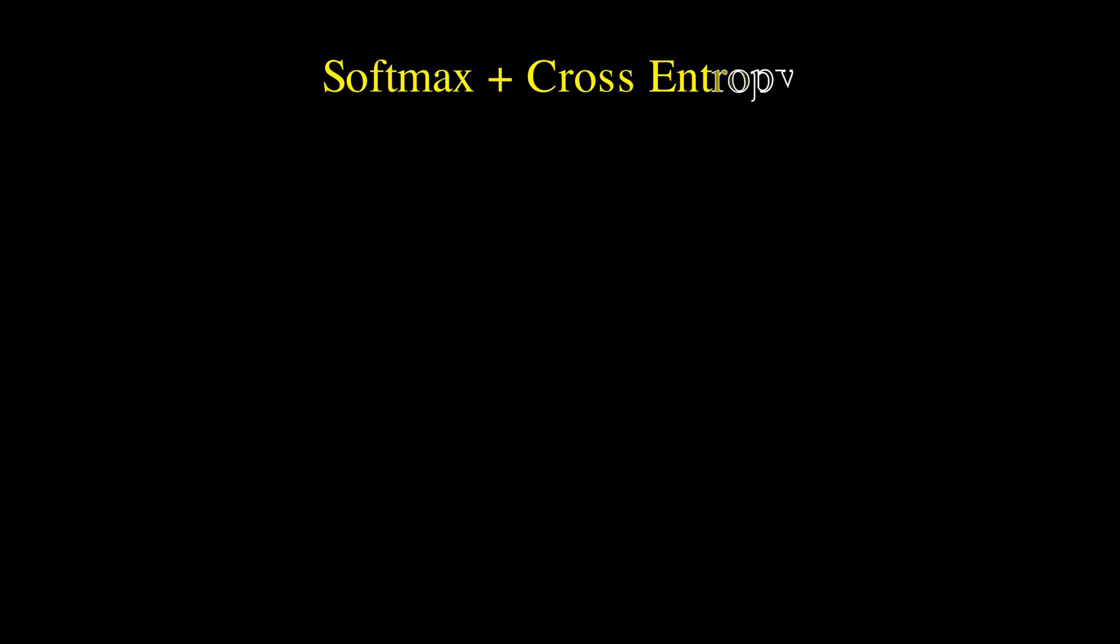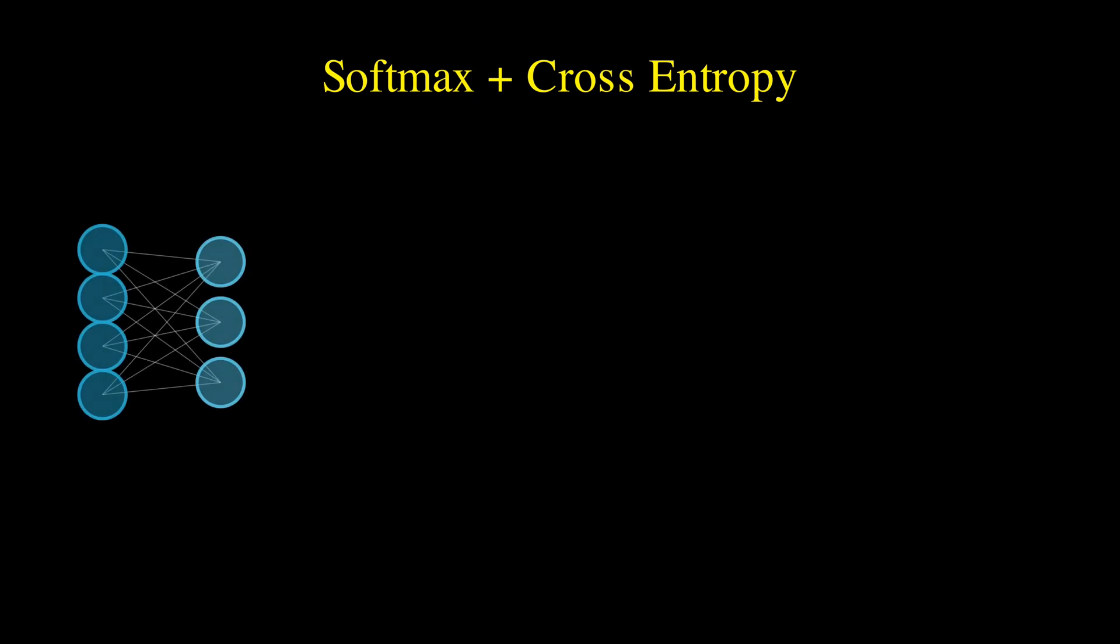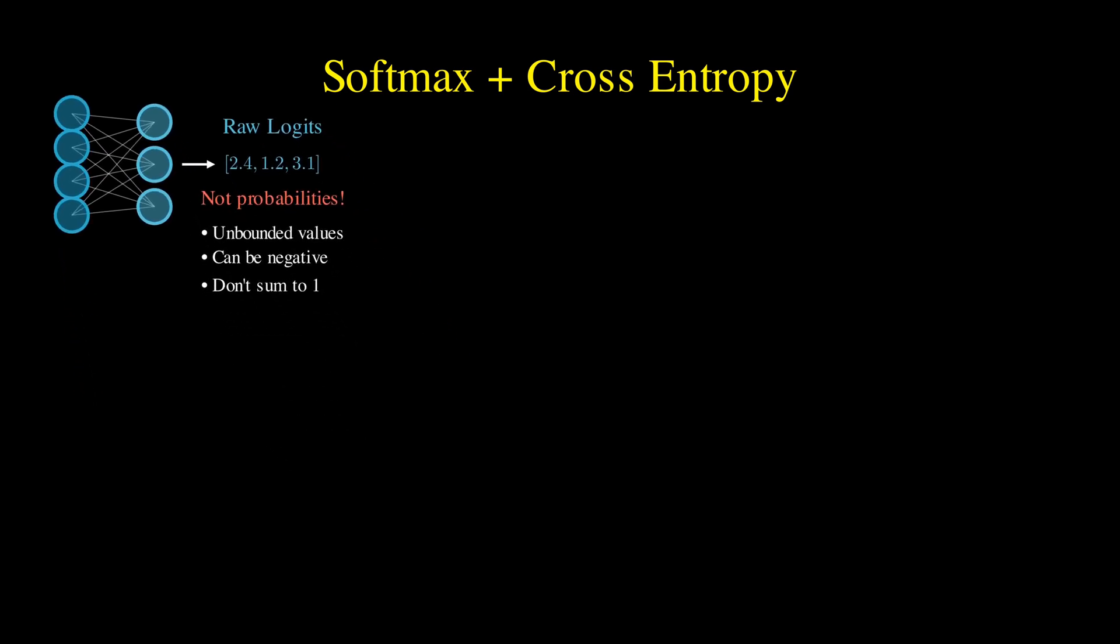In neural networks, there is an important detail. Network outputs aren't probabilities, they are unbounded values called logits. To convert them to probabilities, we use the softmax function,